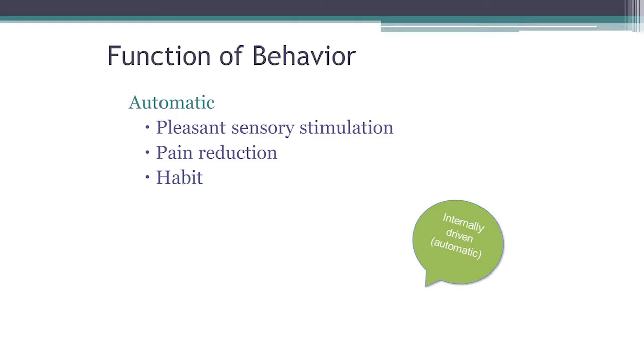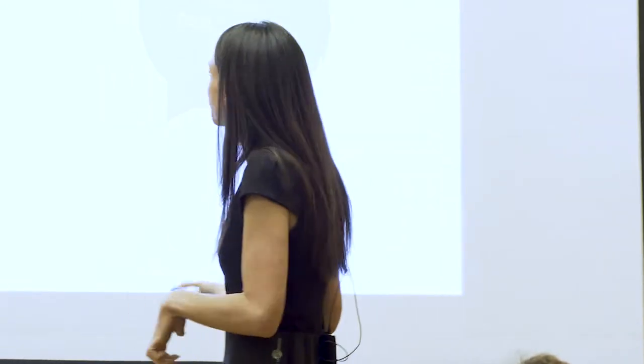Automatic reinforcement — these are reinforcers happening within the body, or 'under the skin,' as behavior analysts say. In and of itself, the behavior is reinforcing. Internally driven. This is the area of ABA that is most nebulous, because ABA really likes to talk about things that are directly observable and measurable. But it's really hard to get at the variables that happen under the skin that are actually affecting the individual internally — yet they're still extremely important. There's a lot of new research going on right now looking at this subclass of reinforcers, because it's largely been neglected.